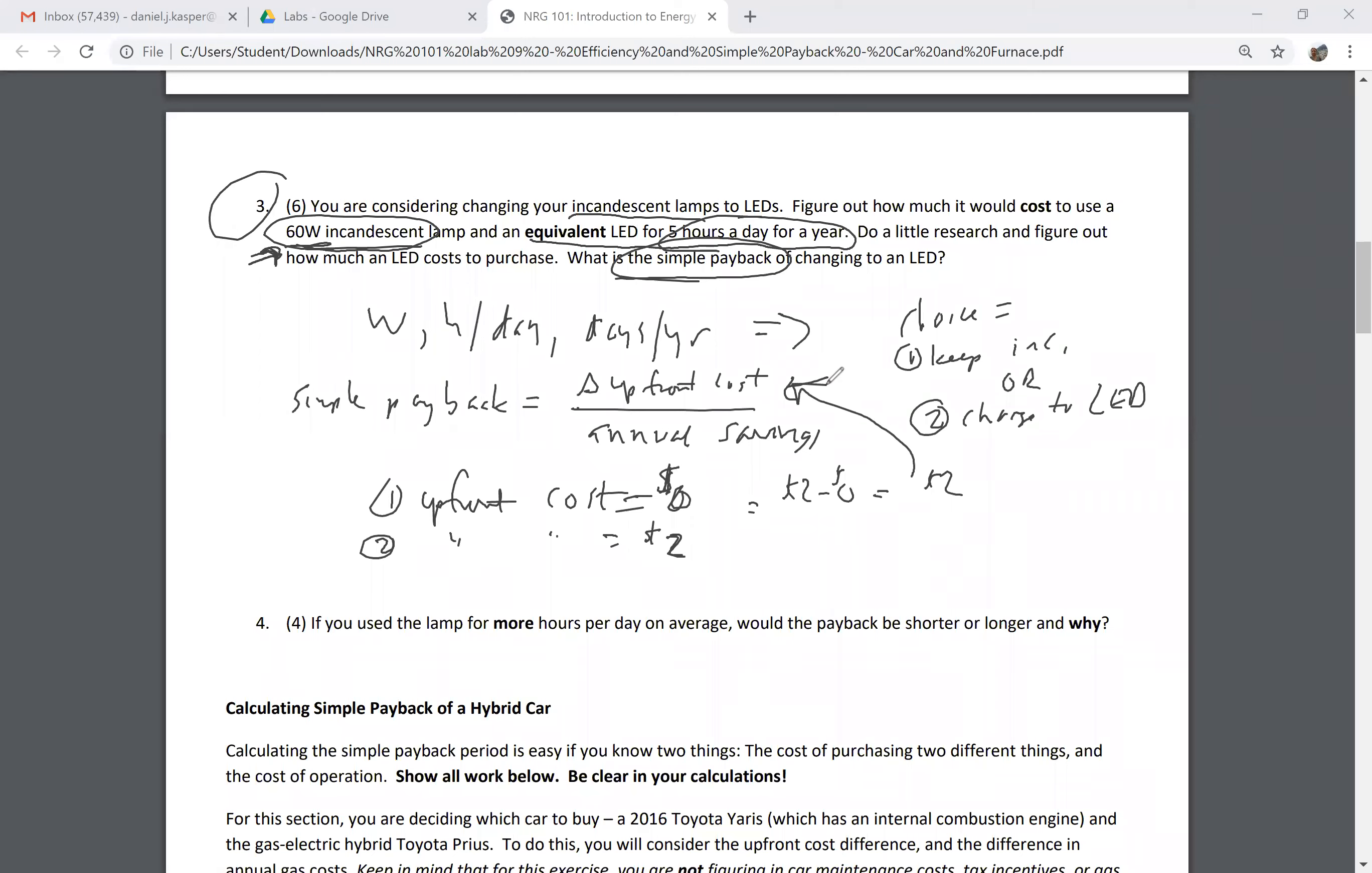Now I need to know my annual savings of changing to the LED. I'm going to let you go through that calculation, but you can easily figure out if I have a 60 watt incandescent and I use it five hours a day, every day of the year, how much it's gonna cost me.